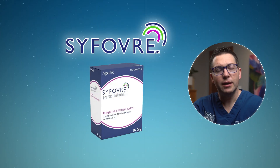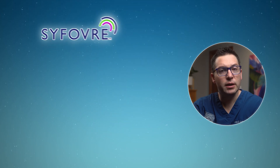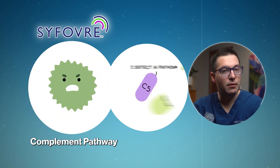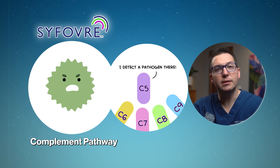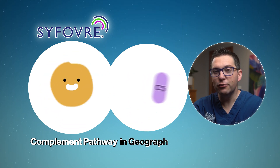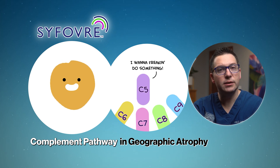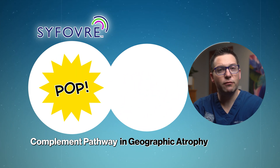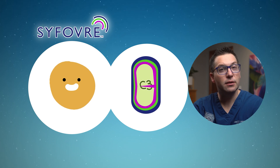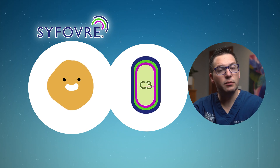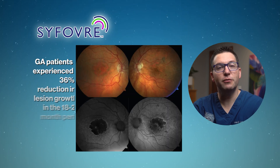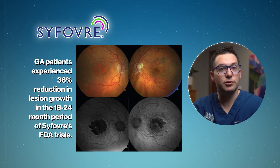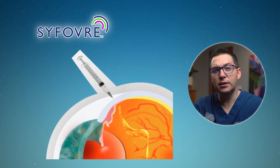Recently, over the last year, there have been some new treatment options, including Syfovre and Izervay. These are exciting new treatments for GA. Syfovre works by targeting a part of the immune system known as the complement pathway. The complement system is part of your body's immune response that helps clear away damaged cells and fight infections. However, in GA, this system becomes overactive and starts attacking healthy cells in the macula. Syfovre blocks a specific protein called C3 in this pathway, reducing the damage and slowing the progression of GA. Recent studies have shown that Syfovre can help slow down the progression of GA and preserve vision. Syfovre is usually given as an injection into the eye by an eye doctor.